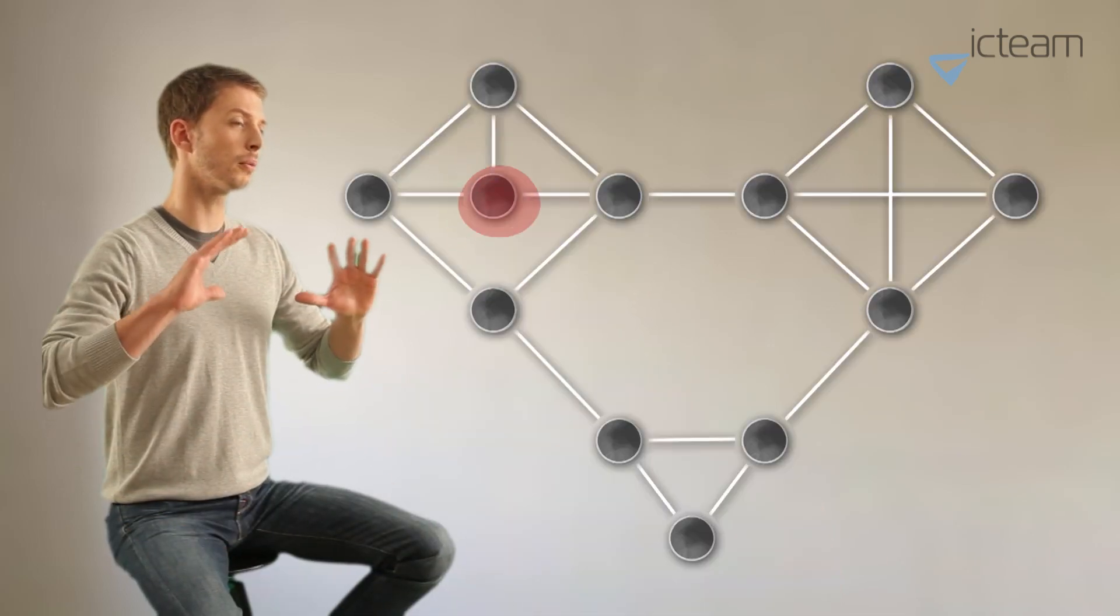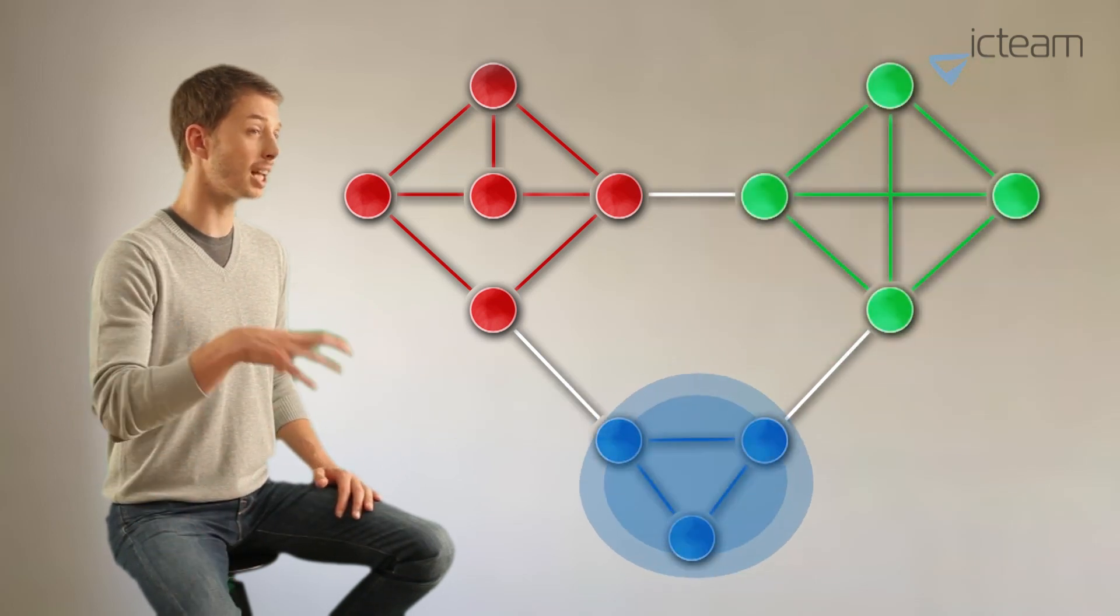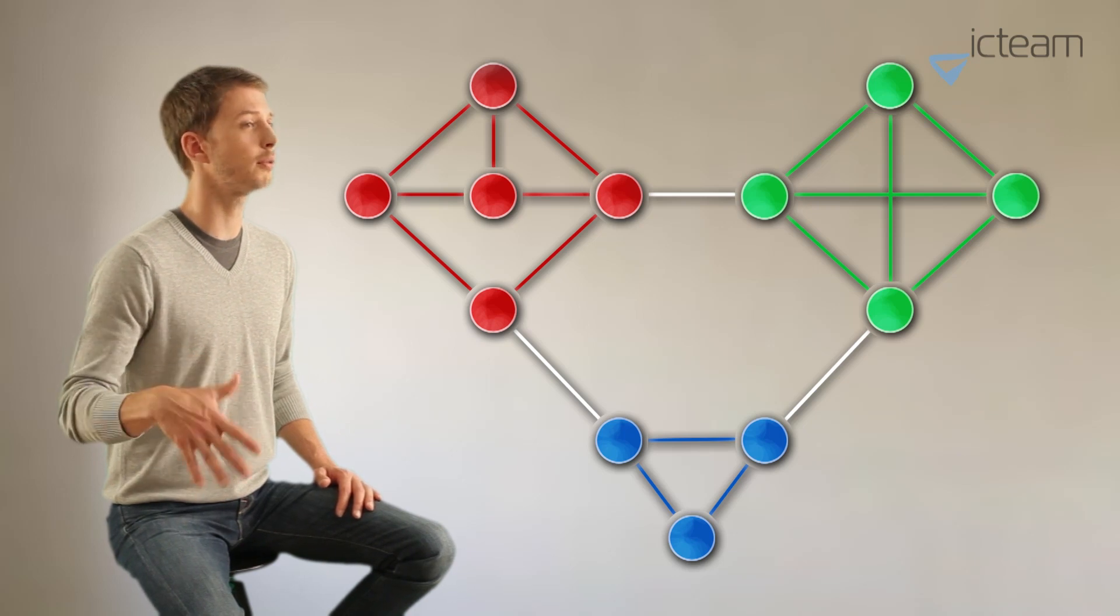One interesting property of many graphs is that nodes tend to form dense, highly connected clusters. Those dense structures correspond to the communities in your network and arise naturally from social behaviors.